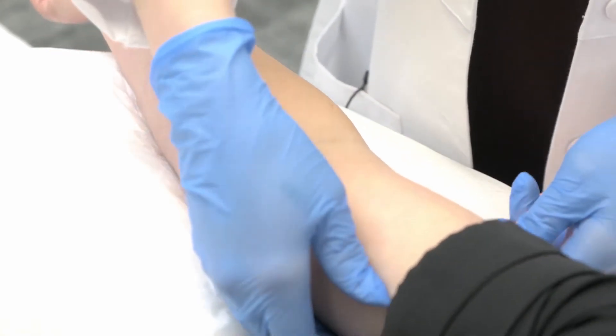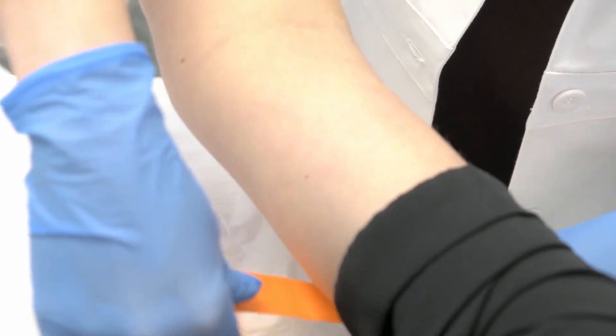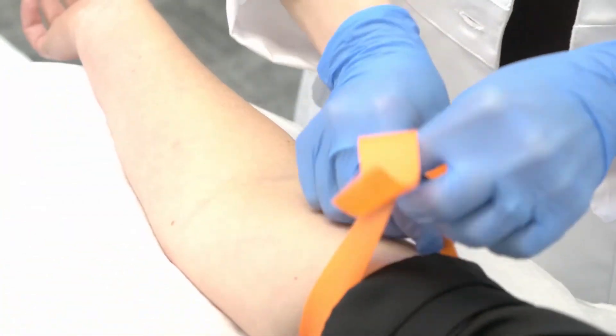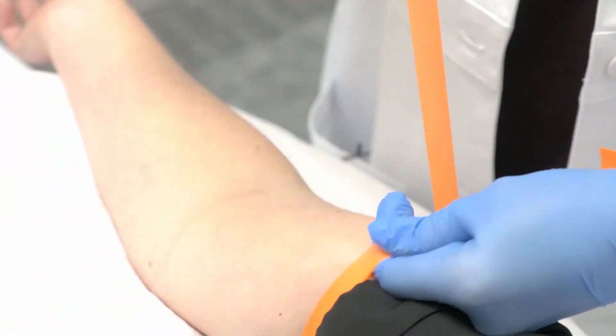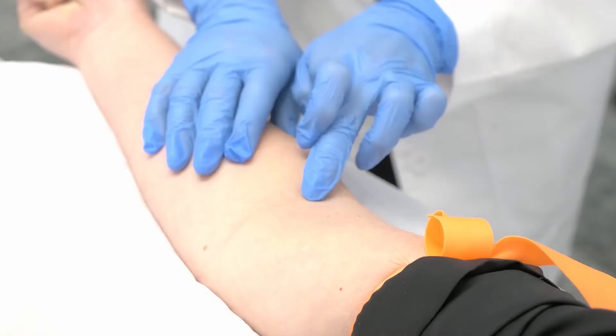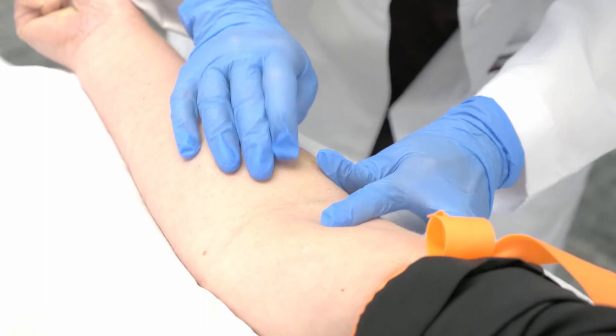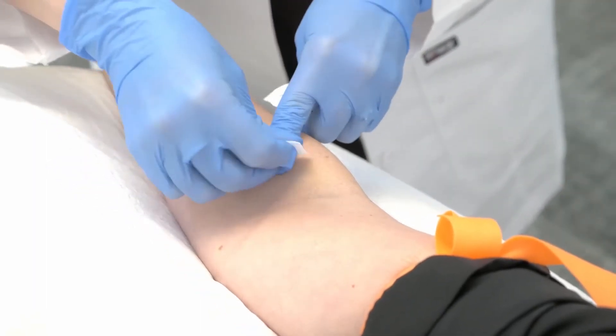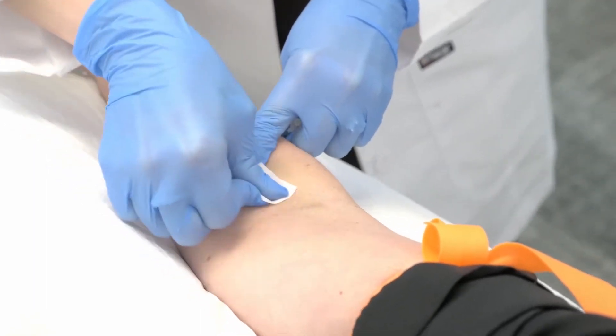Now apply the tourniquet to the patient's arm. Have the patient make a fist. Check for veins in the pressurized arm. The vein will feel like a trampoline. Cleanse the area to be punctured with an alcohol wipe.